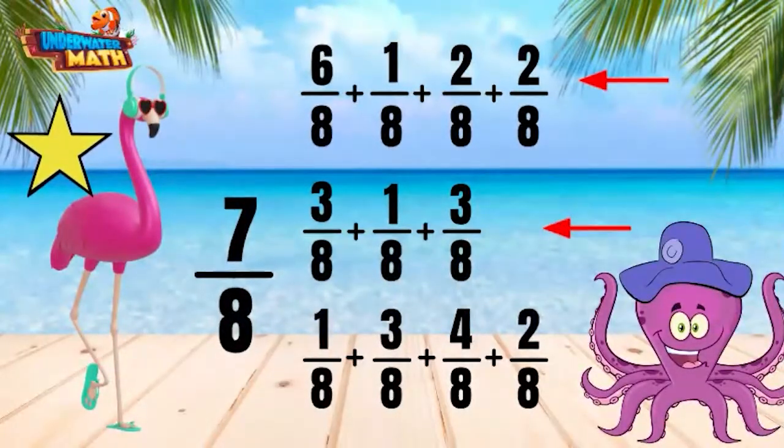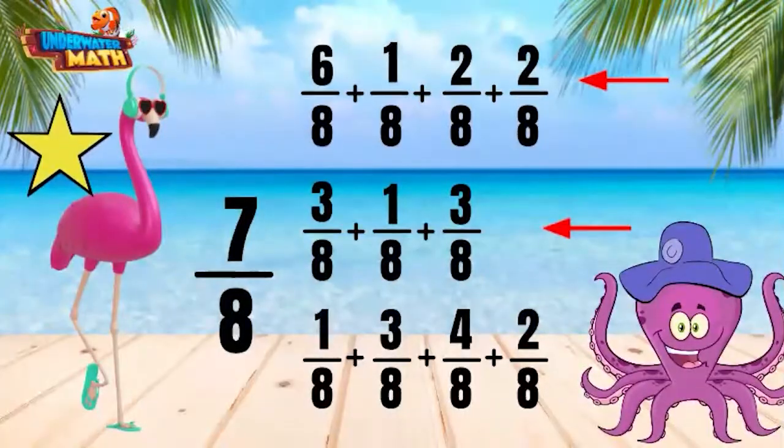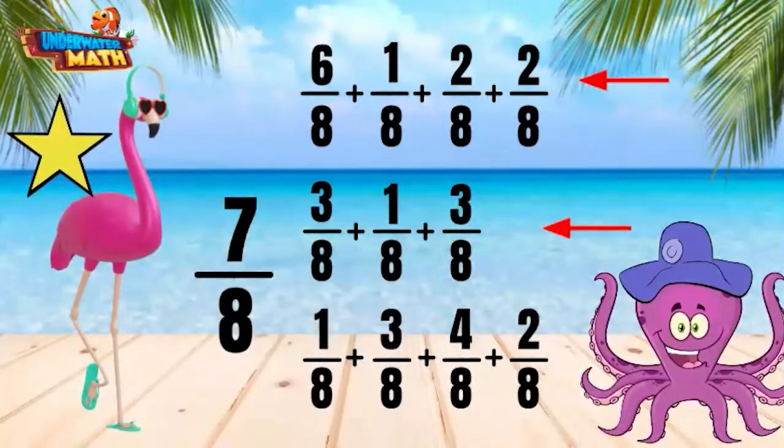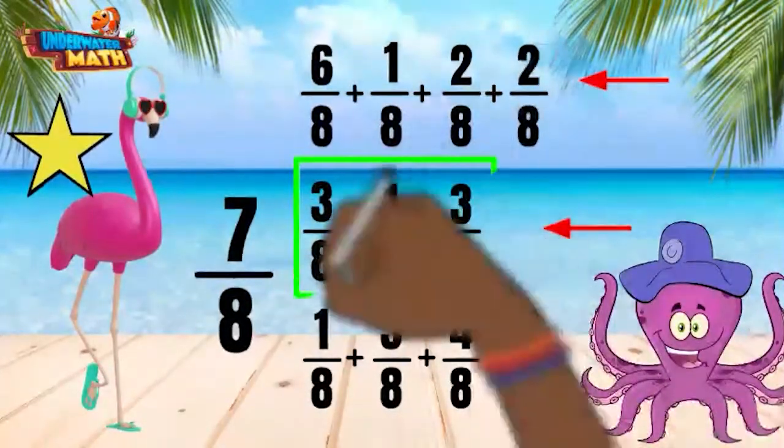Let's add the numerators of the second expression and see if we get 7/8. 3 plus 1 is 4, plus 3 is 7. This expression has a sum of 7/8. Hooray!